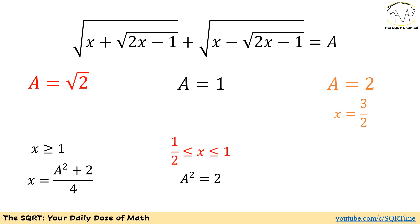Obviously, when A is square root of 2, then A squared is 2. For that case, we can say that any possible values of x between 1 over 2 and 1, including those values, are going to be possible.